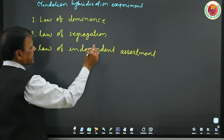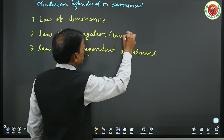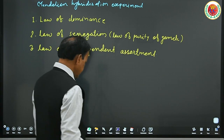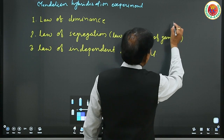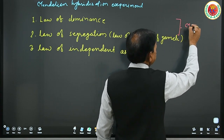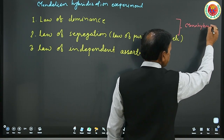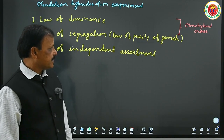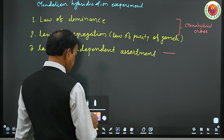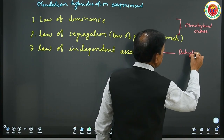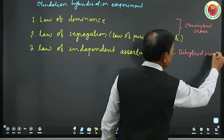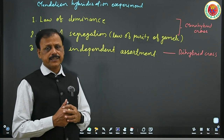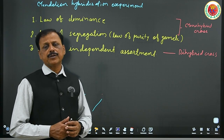The law of segregation is also known as the law of purity of gametes. The first two laws are studied by monohybrid cross — a cross he made between two organisms of the same species with contrasting characters. The law of independent assortment is studied through dihybrid cross. When we study monohybrid cross, we study the law of dominance and law of segregation. When we study dihybrid cross, we study the law of independent assortment.